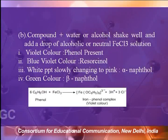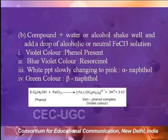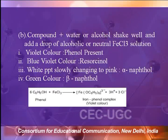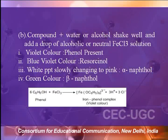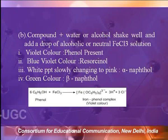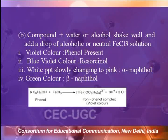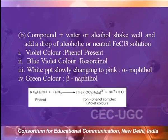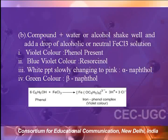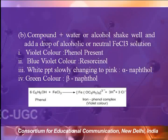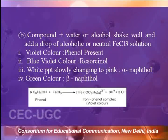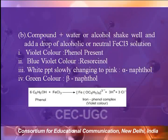The second test you can do for the phenolic functional group: take the compound in a test tube, then add water or alcohol to make a solution. Shake it well and then add alcoholic or neutral ferric chloride solution. Observe the color. If a violet color appears, then a phenolic functional group may be present.